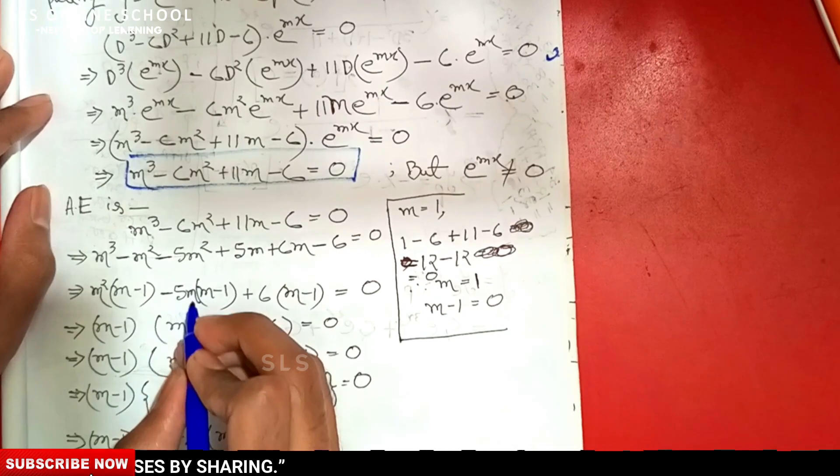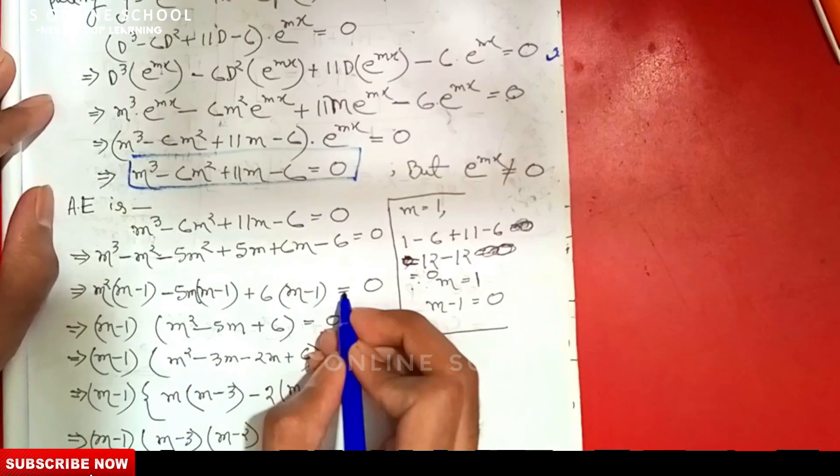Further factoring: m² - 5m into (m - 1) - 5m(m - 1) + 6(m - 1) = 0.